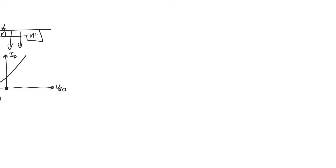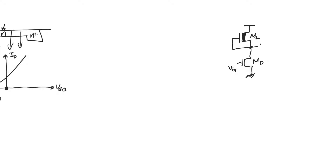This is helpful because it allows us to use it as a load in an inverter. The inverter has a driver that is still a normal NMOS, and the load is a depletion NMOS. V_out is still taken at the drain of the driver. Let's look at how this inverter works.